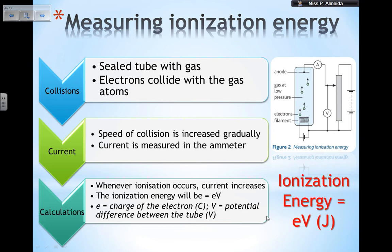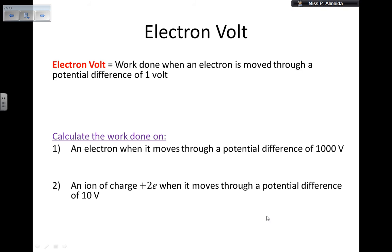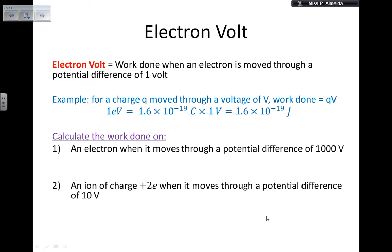The electron volt is defined as the work done when an electron is moved through a potential difference of one volt. For a charge q moved through a potential difference V, the work done is q × V. So one electron volt equals 1.6 × 10⁻¹⁹ coulombs × 1 volt, which equals 1.6 × 10⁻¹⁹ joules.